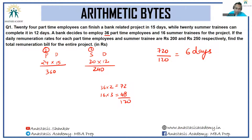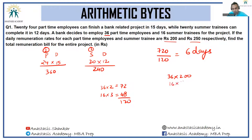The daily remuneration rates for each part-time employee and summer trainee are rupees 200 and 250 respectively. The daily bill will be 36 into 200 plus 16 into 250, and this whole thing will get multiplied by 6 to get the total bill. 36 into 200 is 7200.